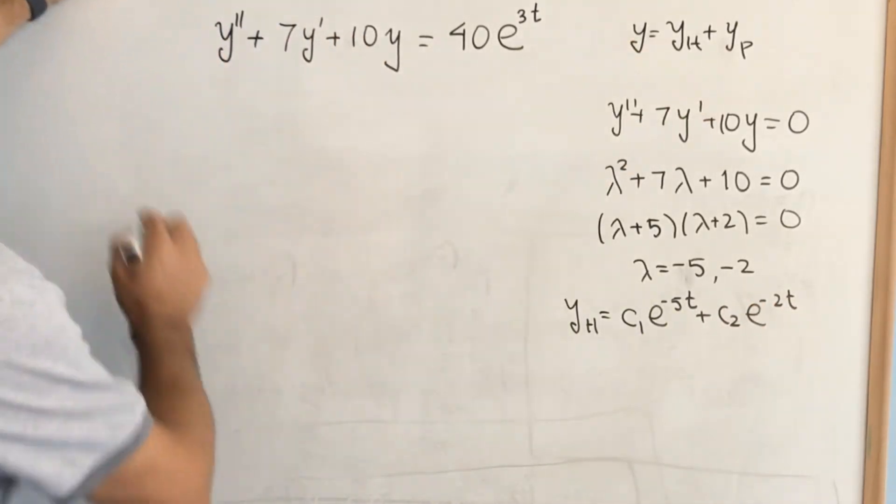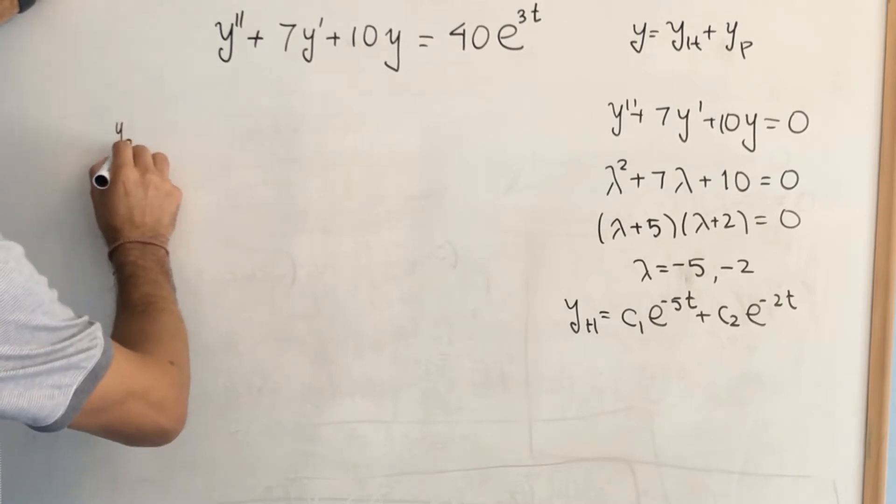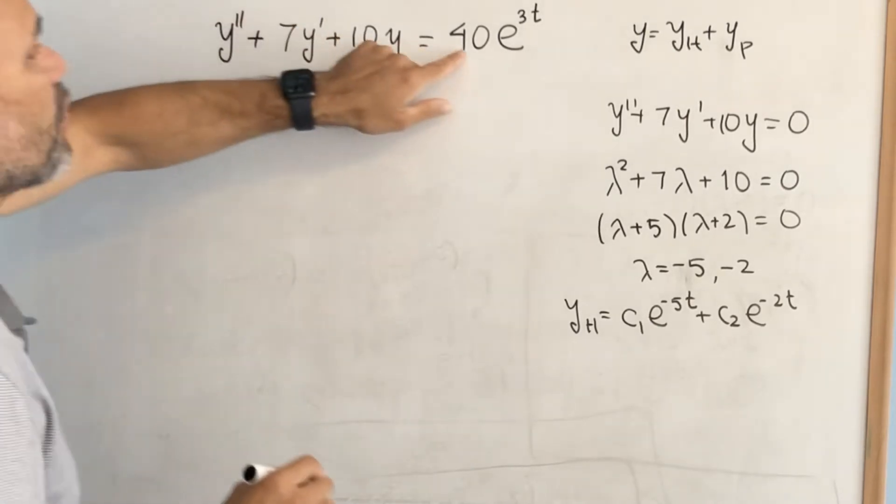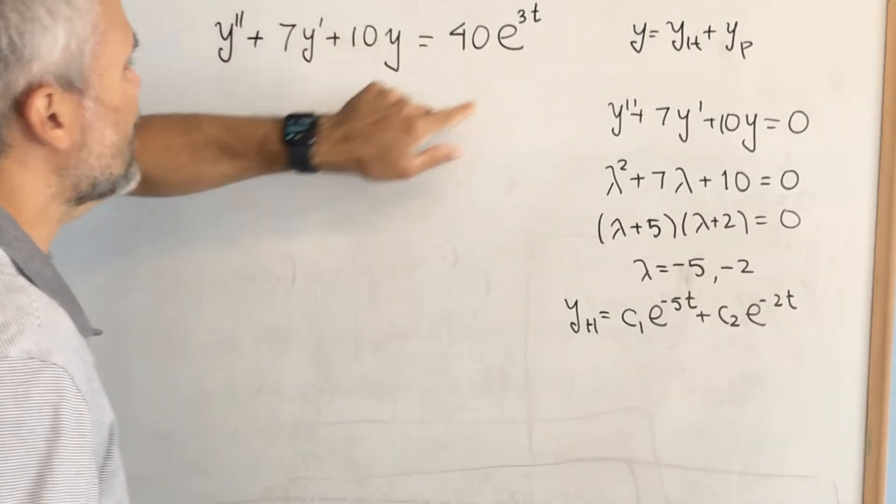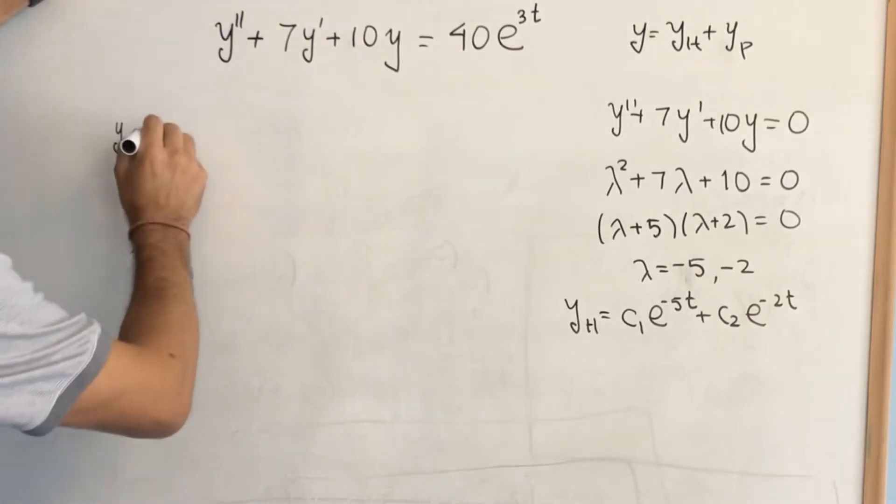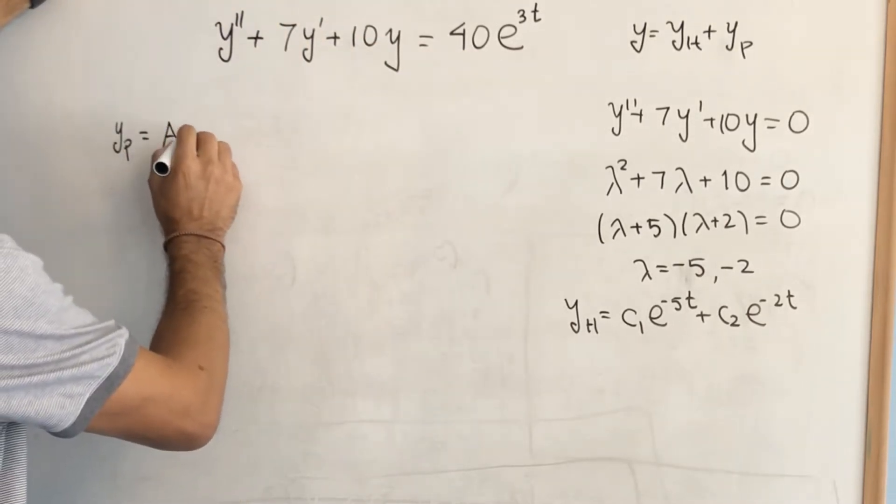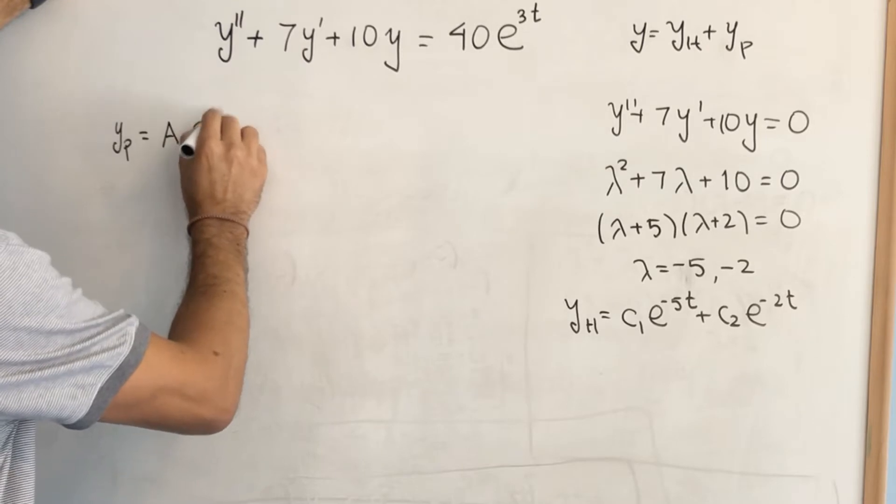To find the particular solution, we look at the non-homogeneous part, which is this part, and we look for something similar: a times e to the 3t.